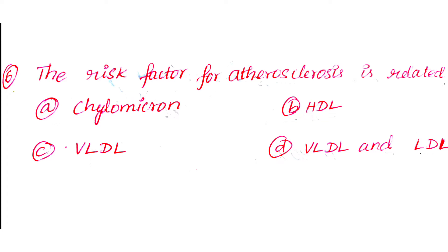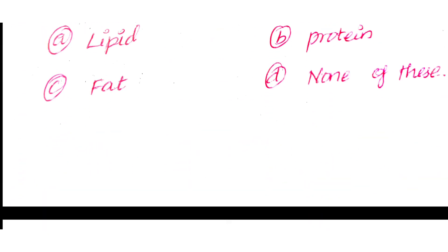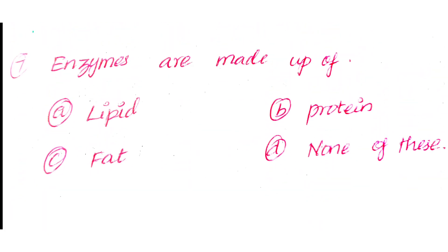Question number 7: Enzymes are made up of. Option A: Lipid. Option B: Protein. Option C: Fat. Option D: None of the above. The answer is Option B: Protein.